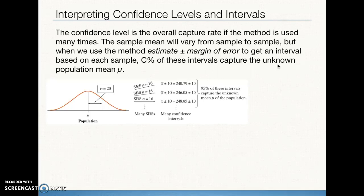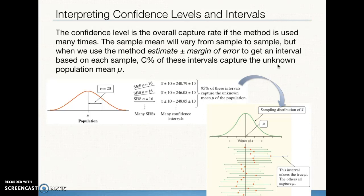95% of the intervals capture the unknown population mean. This graphic shows many possible intervals: the red dots are the point estimates and the green on either side represents the margin of error. One interval shown in blue misses — it does not capture the actual population mean — while all the others do. This represents the 5% that don't capture the true population value, versus the 95% that do.